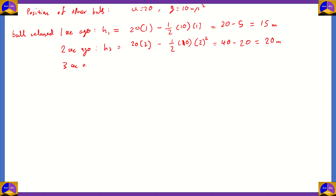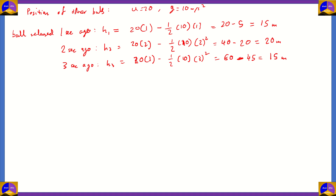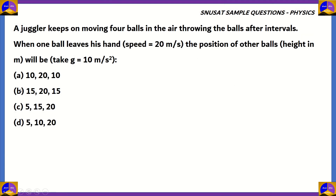For the ball released 3 seconds ago, h3 equals 20 times 3 minus half times 10 times 3 squared. That's 60 minus 45, giving h3 equals 15 meters. So, the positions of the other balls are 15, 20, and 15 meters. The only option stating 15, 20, 15 is option B.